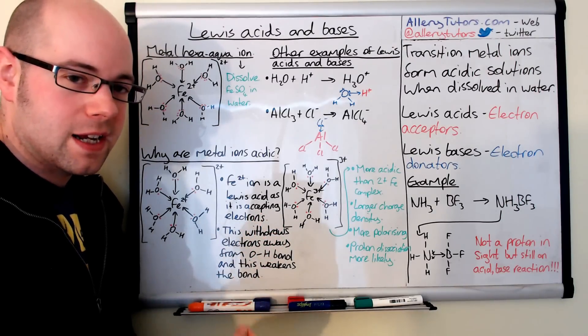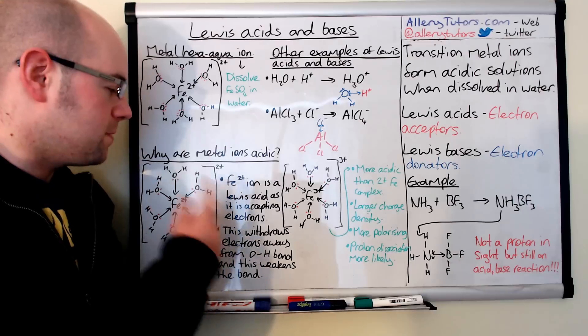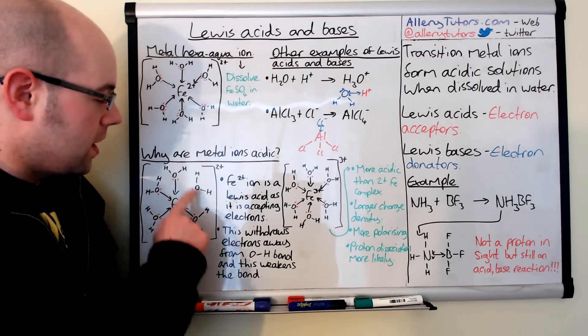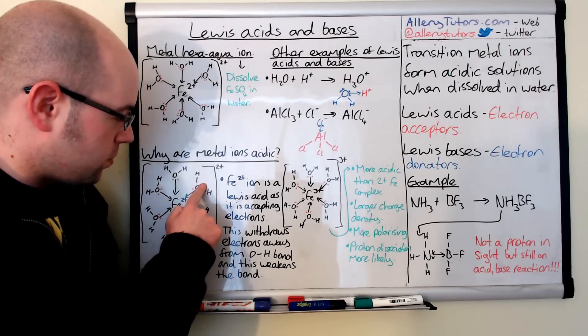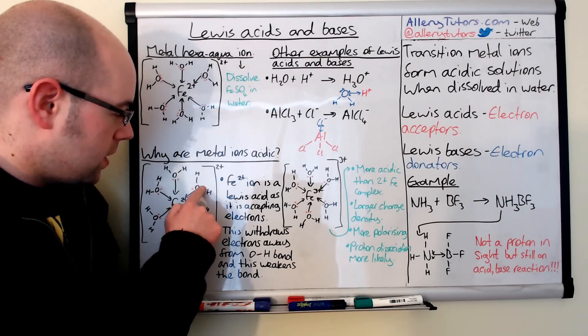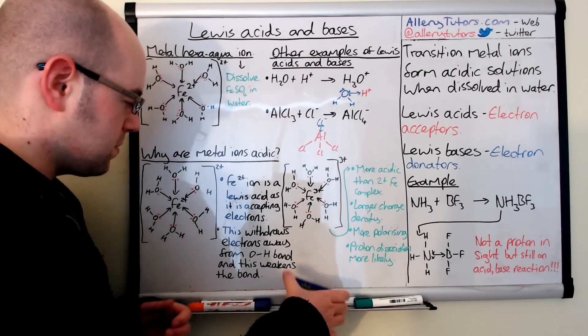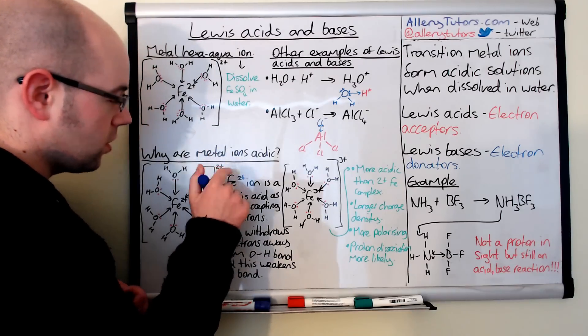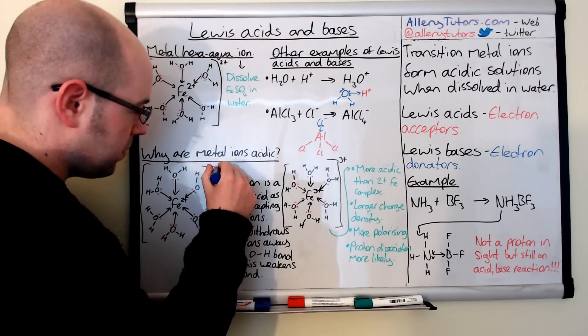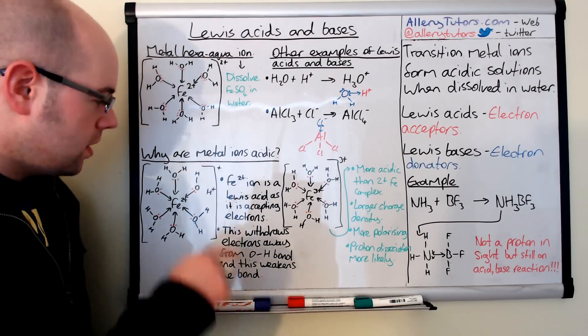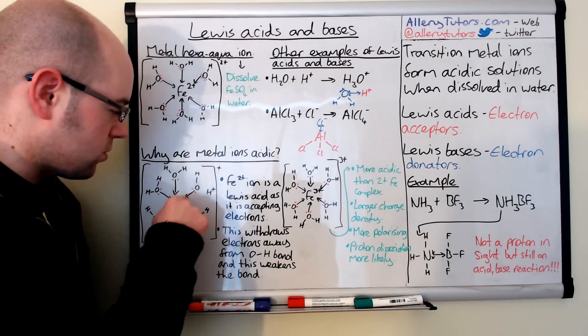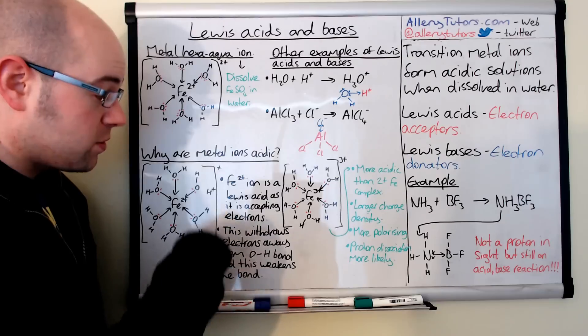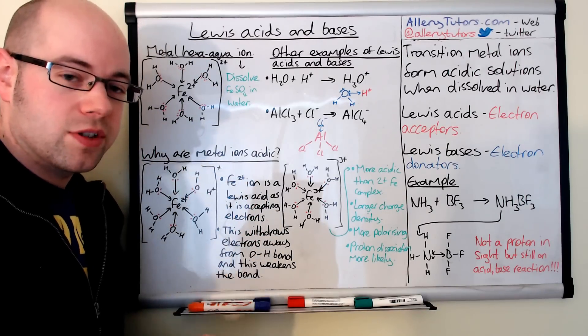That is what's making it acidic and why the pH meter is picking up H+ ions. This bond gets weakened and breaks, and then we have an H+ ion floating around in solution. This whole complex then becomes positively charged by 1, and we're left with an OH minus group. This is really what happens and why transition metals are acidic as well.